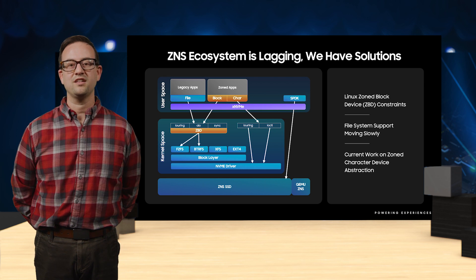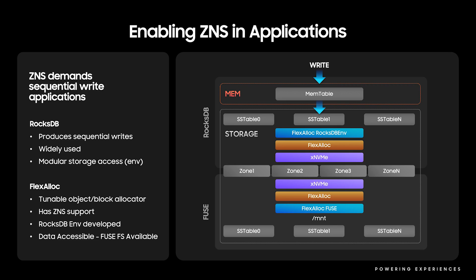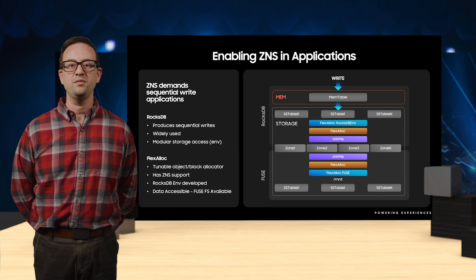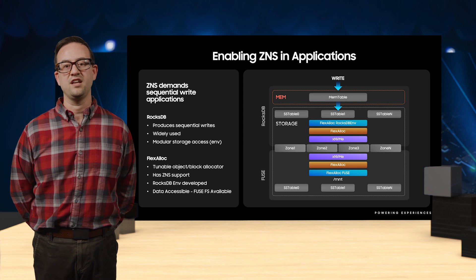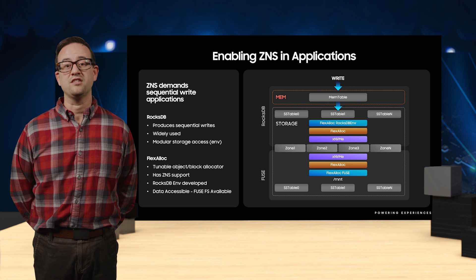This allows developers without ZNS hardware the ability to prototype ZNS applications. Knowing that ZNS requires sequential writes, we looked for widely-used applications that write to persistent storage in a sequential manner. RocksDB, a KV store developed at Facebook with lineage from the LevelDB project created at Google, is a perfect candidate for ZNS integration. Its core design is based on the log-structured merge tree data structure.